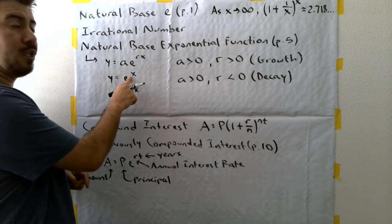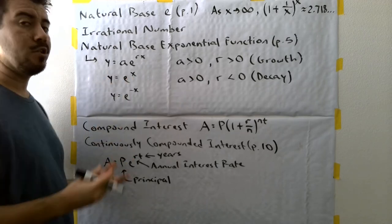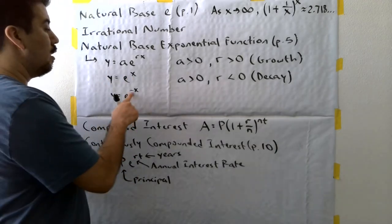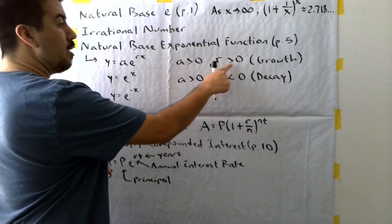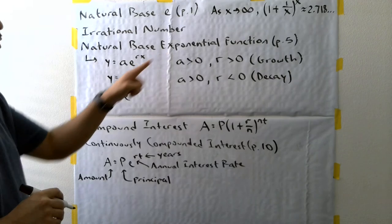In this case, the R value here would be the number one. Just because it's not written there doesn't mean there isn't a number. We just don't usually write it if we have just one as our value. And since one is greater than zero, this is an example of a natural base exponential growth function.